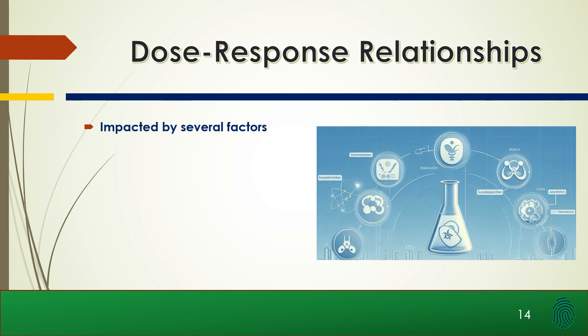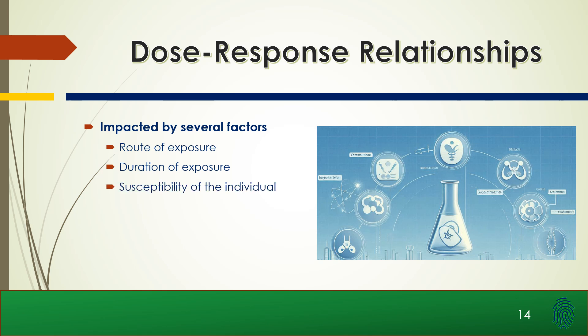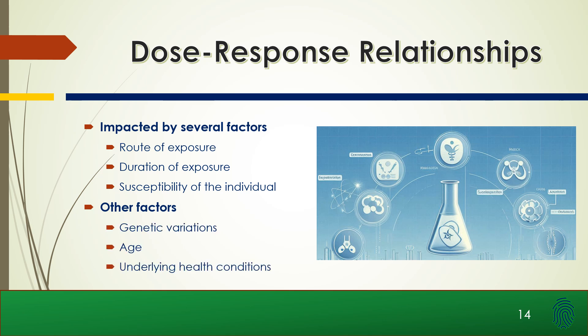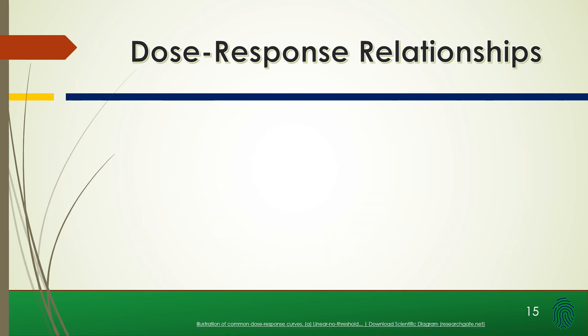The dose-response relationship is impacted by several factors: route of exposure, duration of exposure, and accessibility of the individual, as well as other factors including genetic variations, age, and underlying health conditions. All of these impact how a dose is going to affect a person.